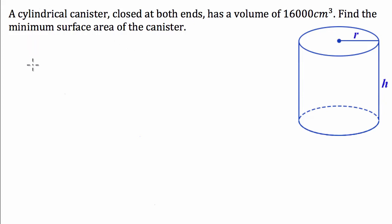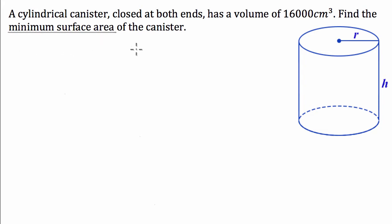A cylindrical canister closed at both ends has a volume of 16,000 centimetres cubed. Find the minimum surface area of the canister. When you see the words 'minimum surface area', this question is going to require some differentiation or calculus. So that's what we're going to go about doing.